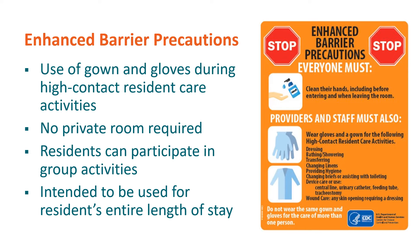Specifically, EBP includes the use of a gown and gloves during high contact resident care activities, including dressing, bathing or showering, performing transfers, changing linens, providing hygiene, changing a resident's brief or assisting them with toileting, providing direct care of an indwelling medical device such as a central line, urinary catheter, feeding tube, or tracheostomy, and when performing wound care on any skin opening that requires addressing. A private room is not required for the resident needing EBP and residents are able to participate in group activities. They are not restricted to their room.